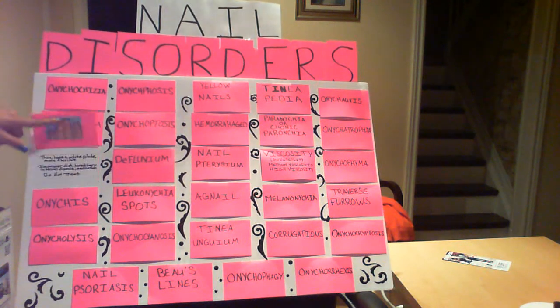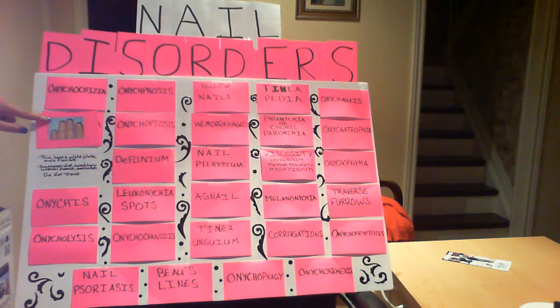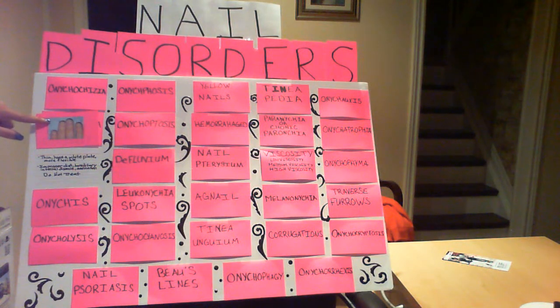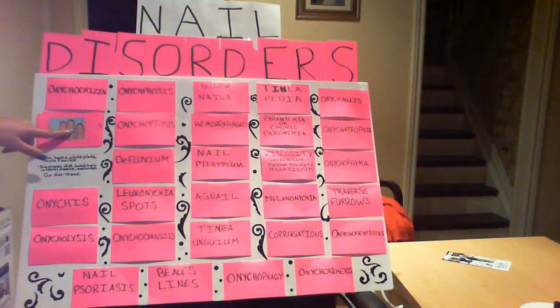Aged shell nails — thin white nail plates that separate from the nail bed, that are more flexible and may curve over the free edge.